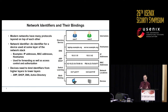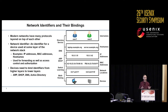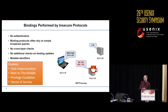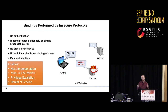These identifiers are used not only to forward traffic, but also for access control and authentication in firewalls. When devices send network traffic, they need to bind from a high-layer DNS name or IP address down to low-layer MAC addresses. To do that, there are a number of protocols they'll use: ARP, DNS, Active Directory, all of these. The problem is that these bindings are performed by insecure protocols that lack authentication and often rely on simple broadcast queries.